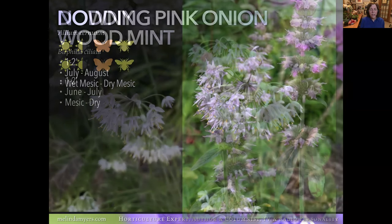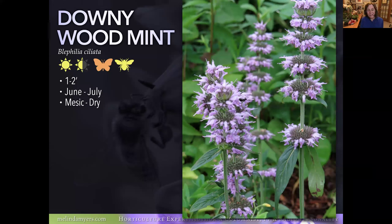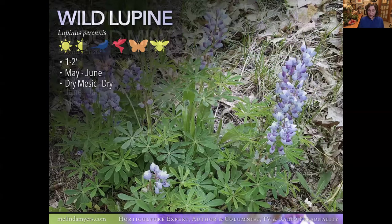Downy Wood Mint — don't let the common name scare you. It's not as aggressive as you might think. If it takes more space than you want, dig it out and divide it, or remove some of the faded flowers — though some birds may feed on the seeds. Taking those faded flowers out after pollinators have visited is a way to manage it. I love the unique flower arrangement on these — quite eye-catching. It's only a couple of feet tall, so it's good towards the outer edges of your rain garden where it tends to be drier.